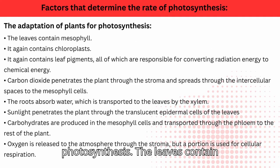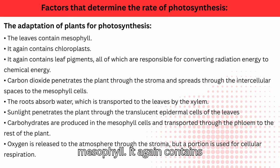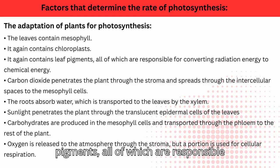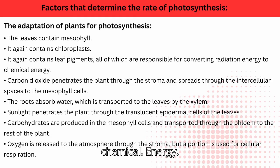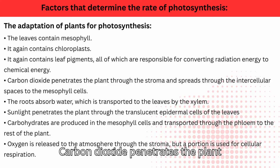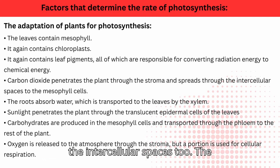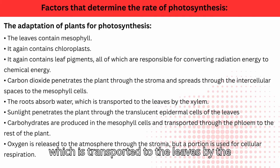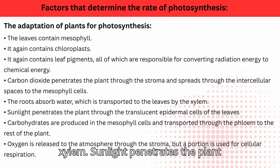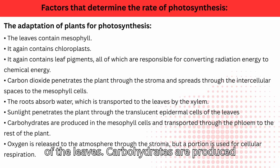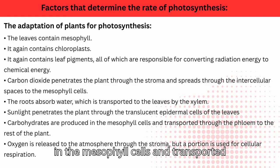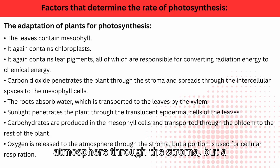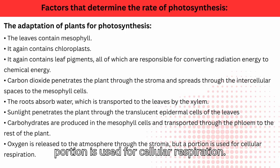The adaptation of plants for photosynthesis: the leaves contain mesophyll, which contains chloroplasts, which contain leaf pigments — all responsible for converting radiation energy to chemical energy. Carbon dioxide penetrates the plant through the stomata and spreads through the intercellular spaces to the mesophyll cells. The roots absorb water, which is transported to the leaves by the xylem. Sunlight penetrates through the translucent epidermal cells of the leaves. Carbohydrates are produced in the mesophyll cells and transported through the phloem to the rest of the plant. Oxygen is released to the atmosphere through the stomata, but a portion is used for cellular respiration.